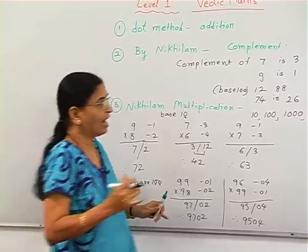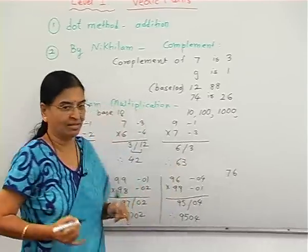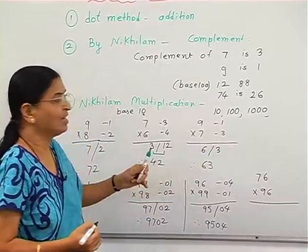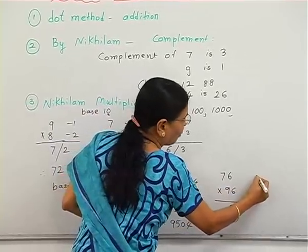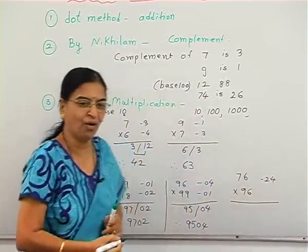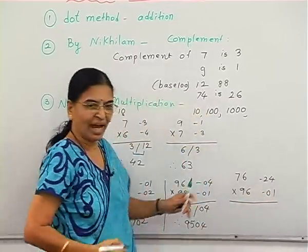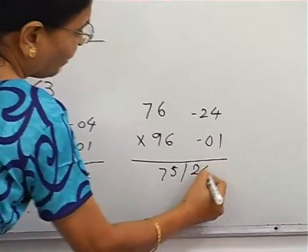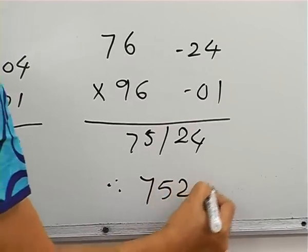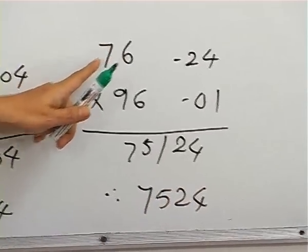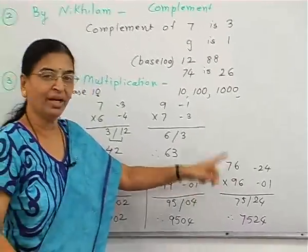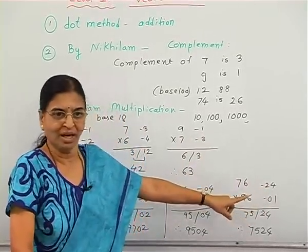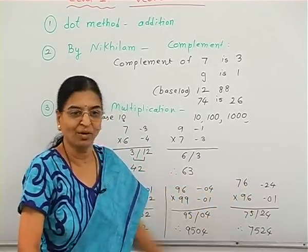For base 100, suppose we take 76 — it is away from the base, but we can still do the same thing. The Nikhilam complement of 76 is minus 24, and for 96 it is minus 01. So 76 minus 1 gives 75, and 24 into 1 gives 24, so the answer is 7524. Note: one number should be nearer to the base for the product to be easy.